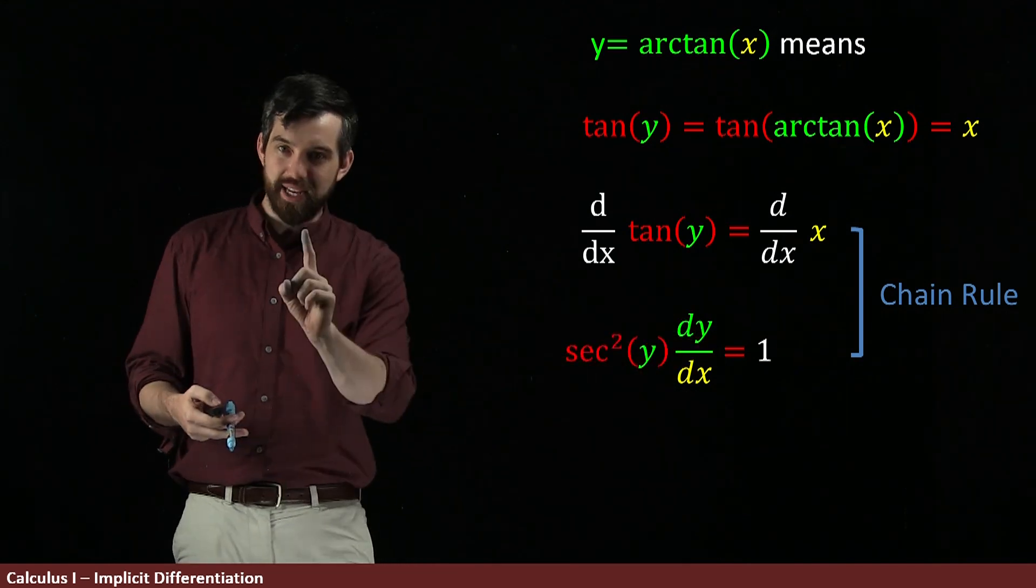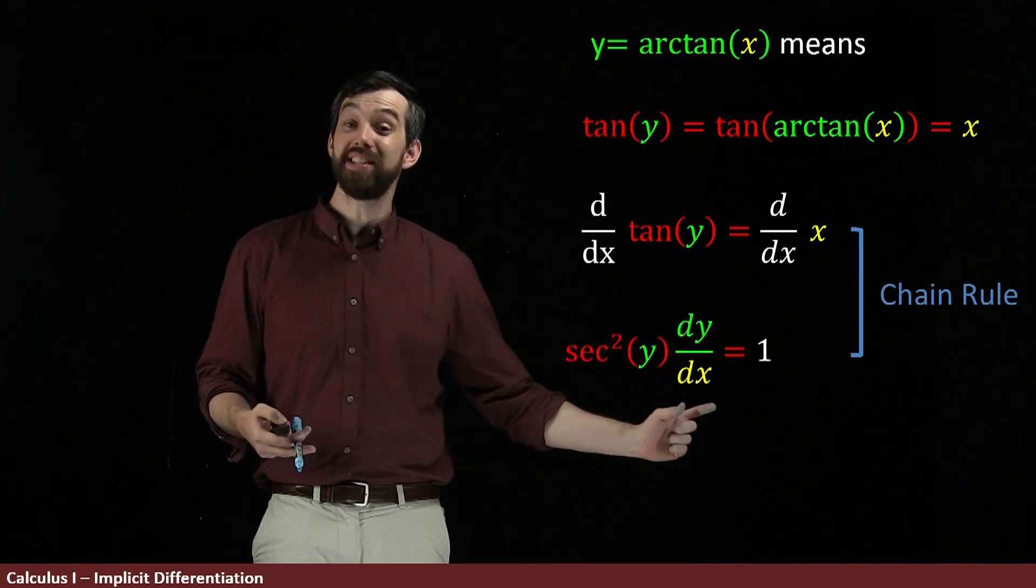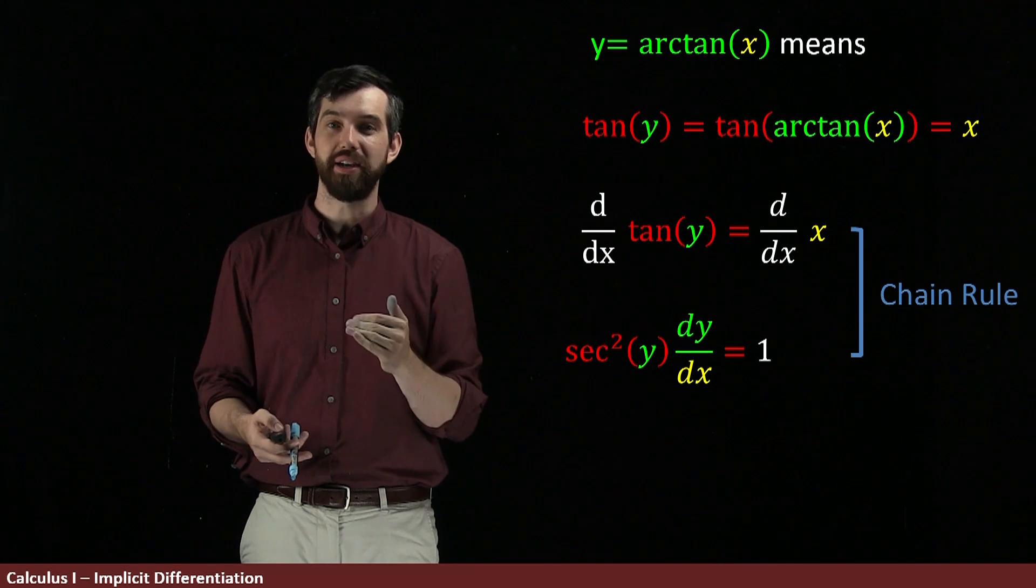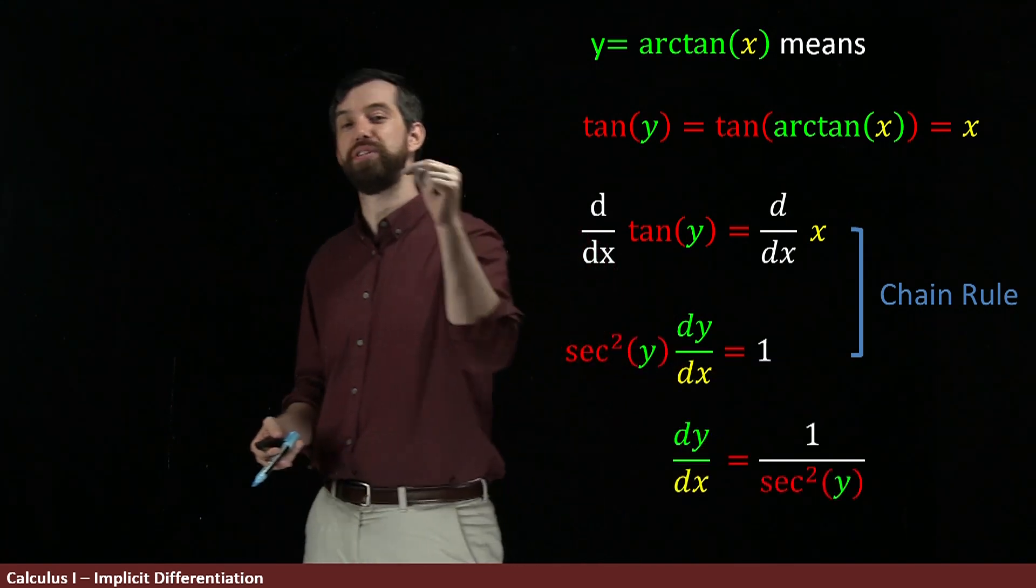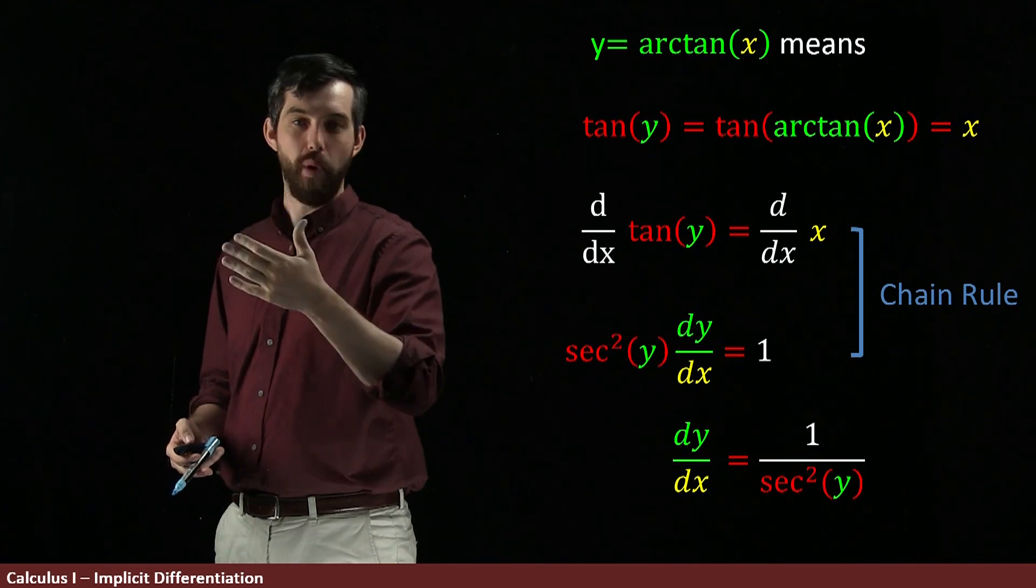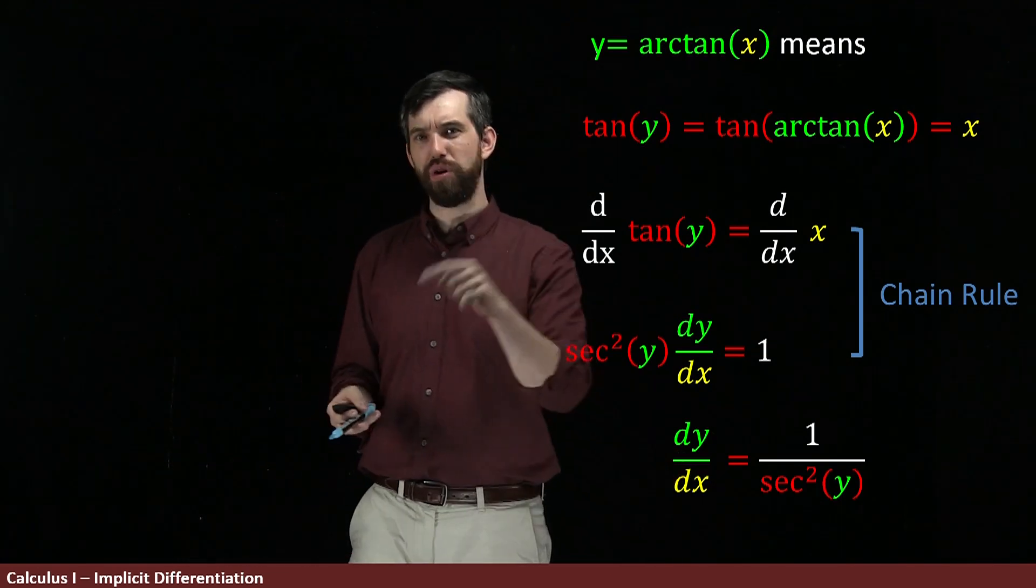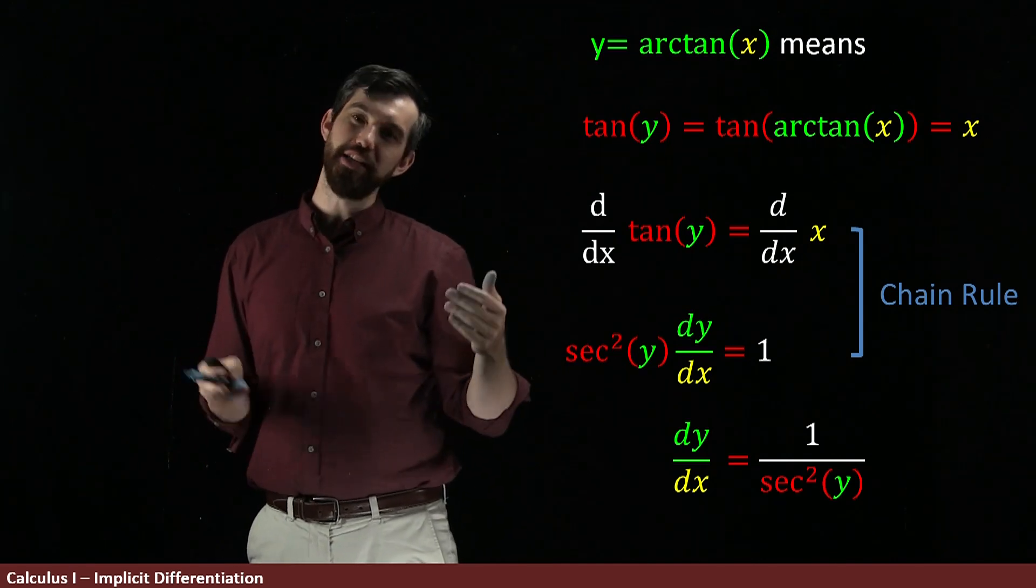So we've got some relationship. Next step, I want to go and I want to isolate the dy dx. So I'm going to divide out here and say that dy dx is 1 over secant squared of y. Now, this answer that I have down here, the derivative is 1 over secant squared of y, is okay.